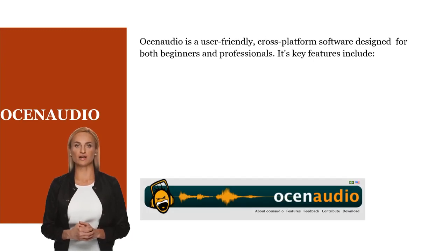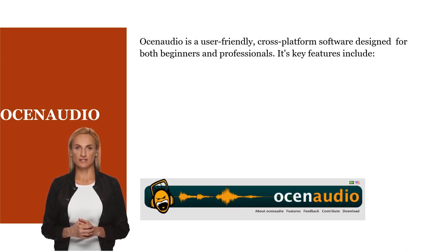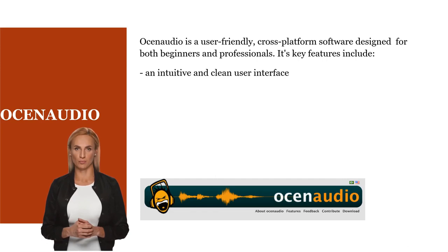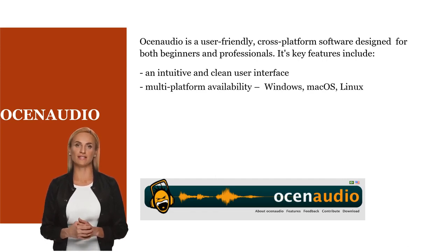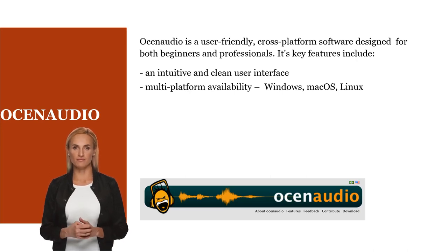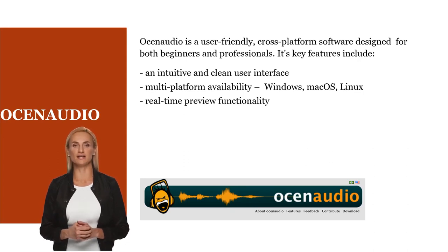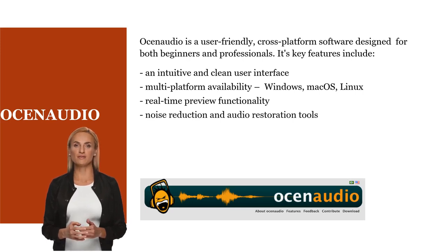OSIN Audio is also a very popular audio editing tool since it is user-friendly, cross-platform software designed for both beginners and professionals. Its key features include an intuitive and clean user interface that makes audio editing tasks straightforward and efficient. Multi-platform availability including Windows, macOS, and Linux, making it accessible to a wide range of users regardless of their operating system. Real-time preview functionality, which allows users to hear the effects of their edits instantly without having to apply them first. Noise reduction and audio restoration tools, allowing users to clean up recordings and improve overall audio quality.